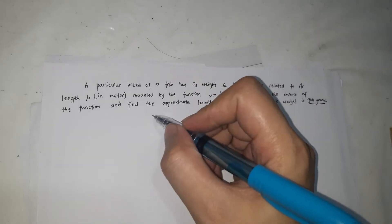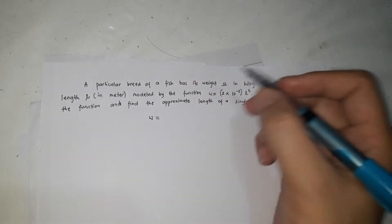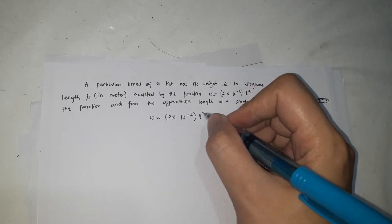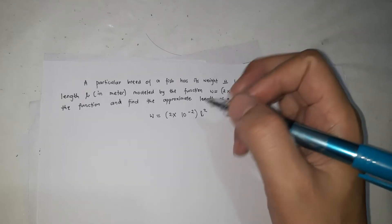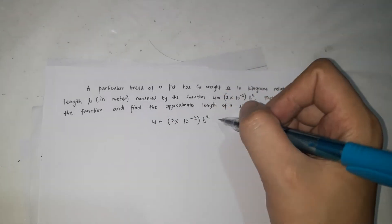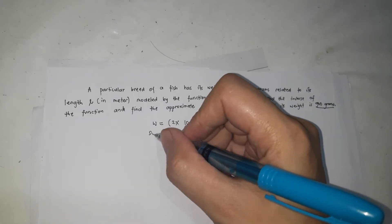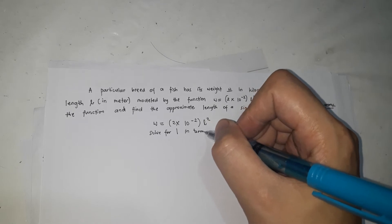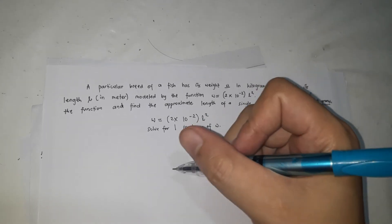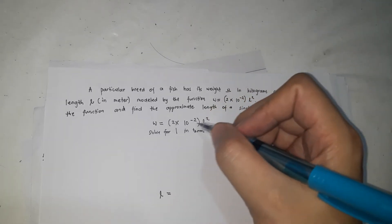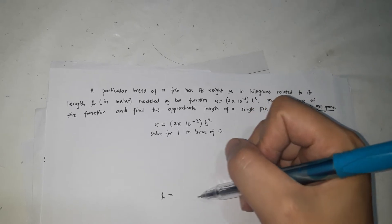The first thing we're going to do is find the inverse. We copy the function: w = 2 × 10^(−2) × l². To find the inverse and avoid confusion, we're not going to interchange w and l — instead, we're going to solve for l in terms of w, so the result will be l = (expression in w).